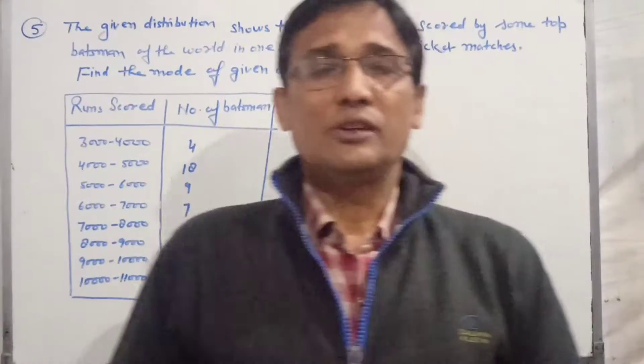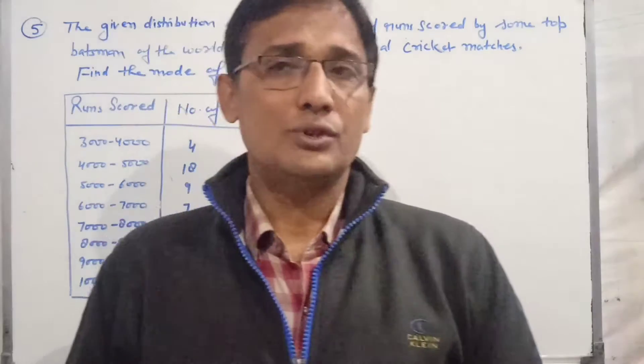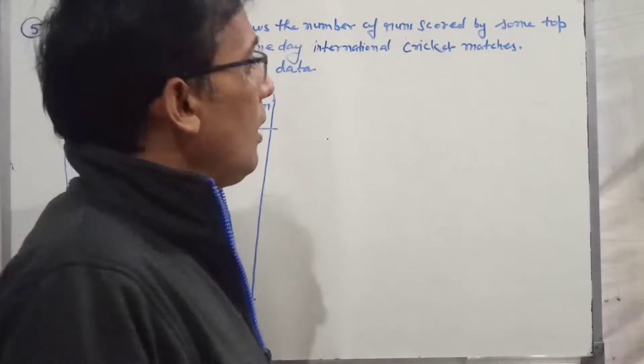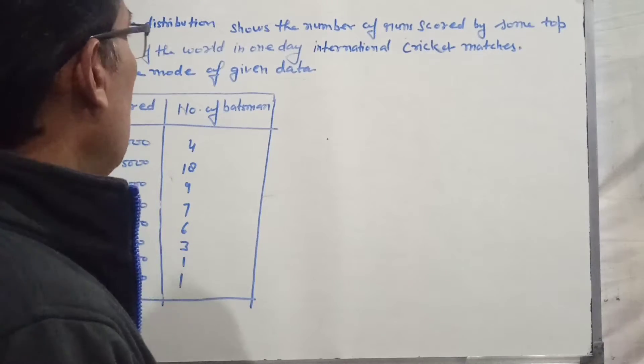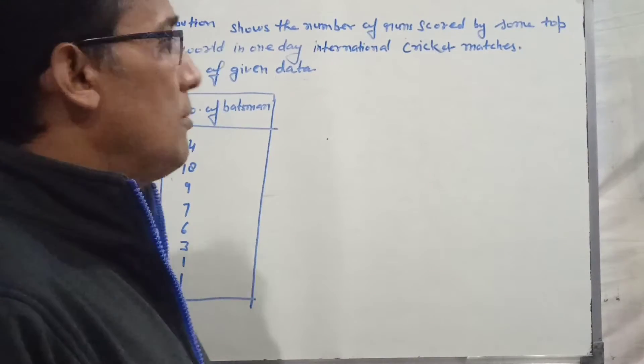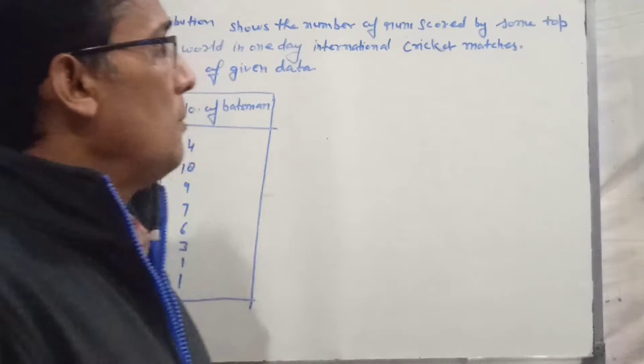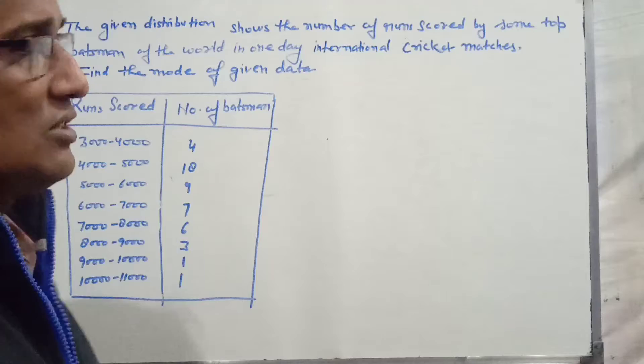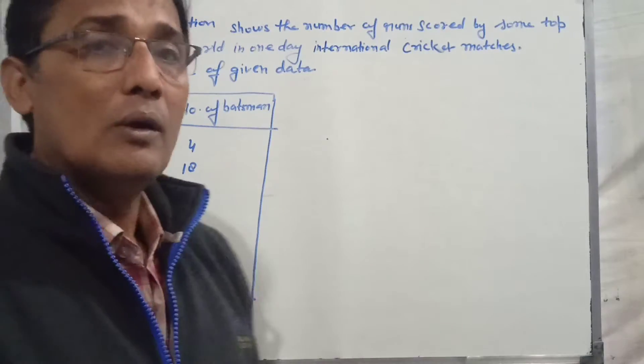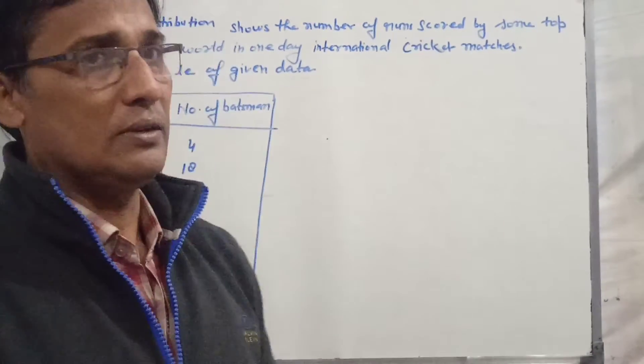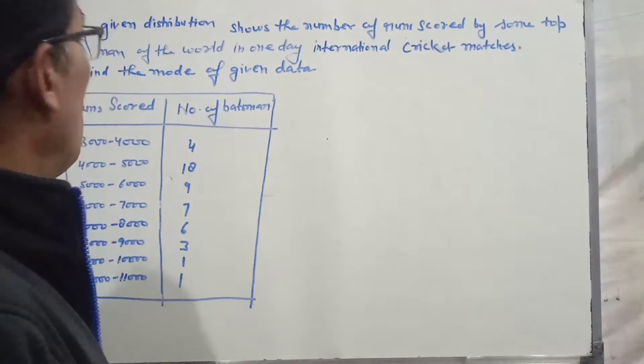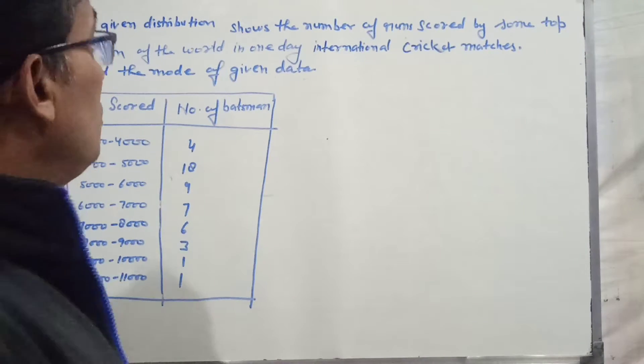Namaskar students. Exercise 14.2, question number 5, you have to find mode in this question. The question is that the given distribution shows the number of runs scored by some top batsmen of the world in one day international cricket matches.